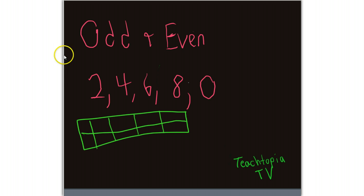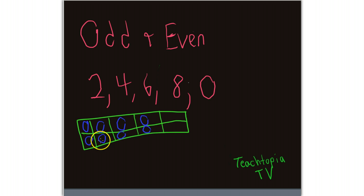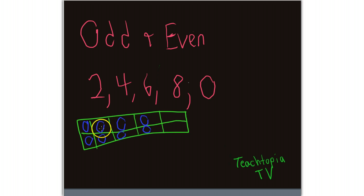I'm going to represent 8 on the 10-frame: 1, 2, 3, 4, 5, 6, 7, 8. Notice that in this scenario every single counter has a matching one with it. We have pairs — groups of 2: 2, 4, 6, 8. There is no individual counter here that is by itself.